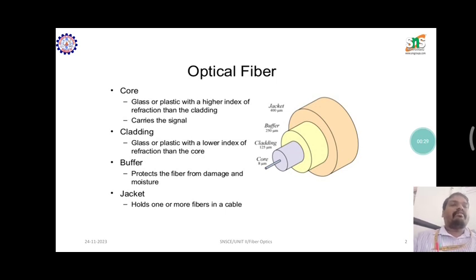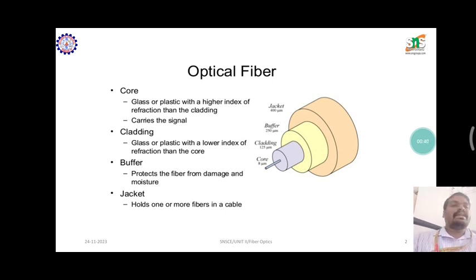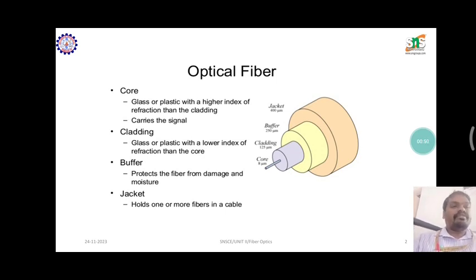In fiber optics there are four different layers. The first one is core material — it is a very thin material, around 8 micrometers in diameter. Another layer is cladding material, which is 125 micrometers in diameter, and buffer material is nearly equal to 250 micrometers in diameter.